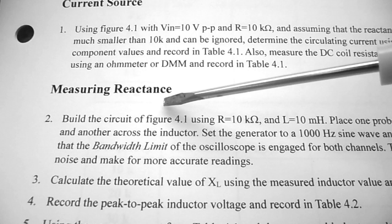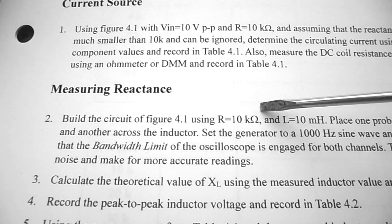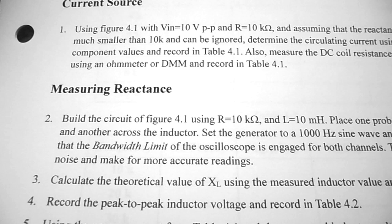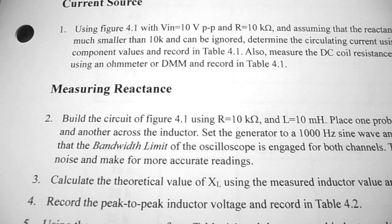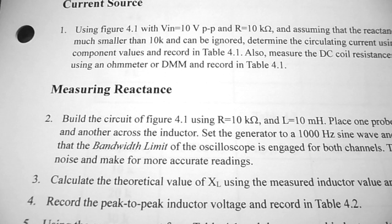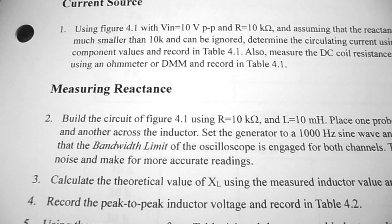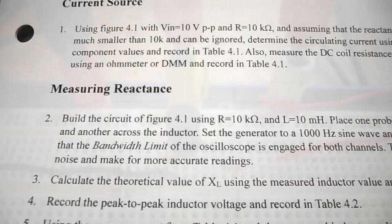Under procedure step number two, we're going to be measuring reactance. We're going to build the circuit of figure 4-1 using R of 10k and L of 10 millihenries, place one probe across the generator and another across the inductor, set the generator to a 1 kilohertz sine wave at 10 volts peak to peak, and make sure the bandwidth limit of the oscilloscope is engaged for both channels to reduce signal noise and make for more accurate readings.